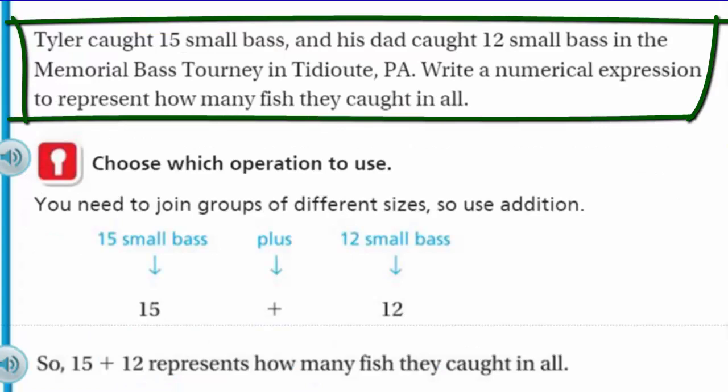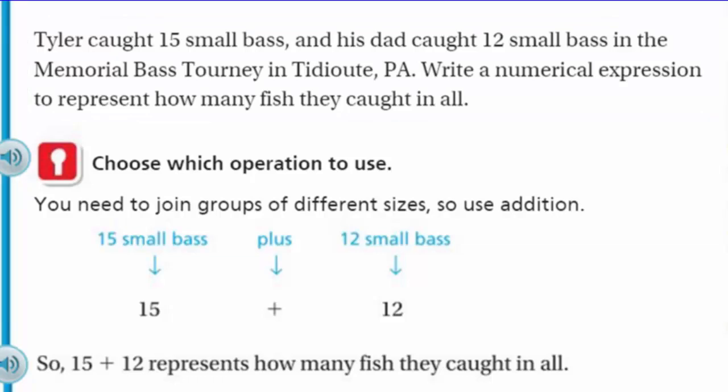Let's go ahead and take a look at our problem. It says Tyler caught 15 small bass and his dad caught 12 small bass in the Memorial Bass Tourney in Tidioute, Pennsylvania. Write a numerical expression to represent how many fish they caught in all. It says choose which operation to use. You need to join groups of different sizes, so use addition. 15 small bass plus 12 small bass. So 15 + 12 represents how many fish they caught in all.